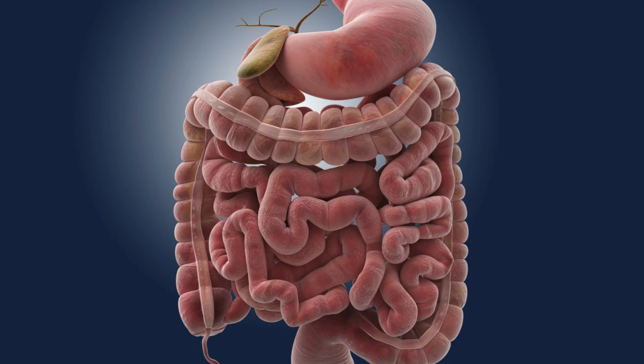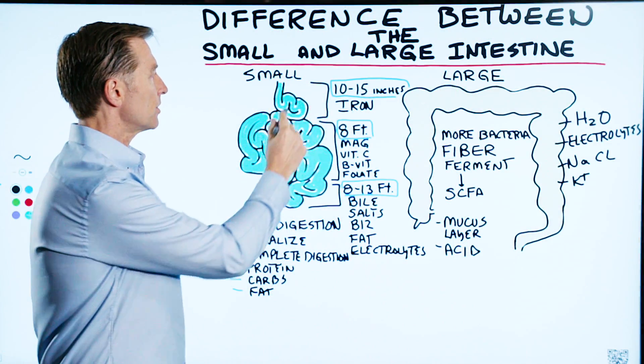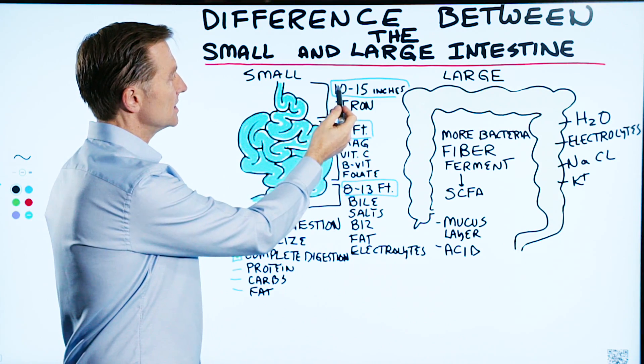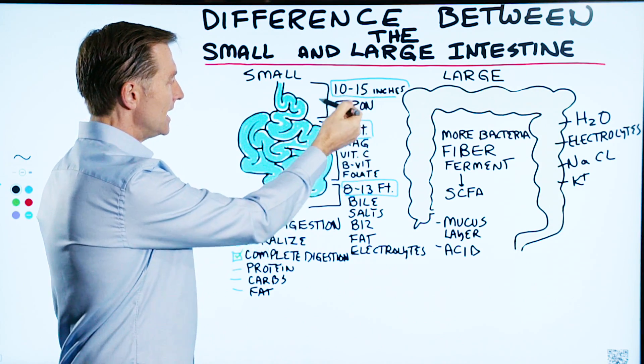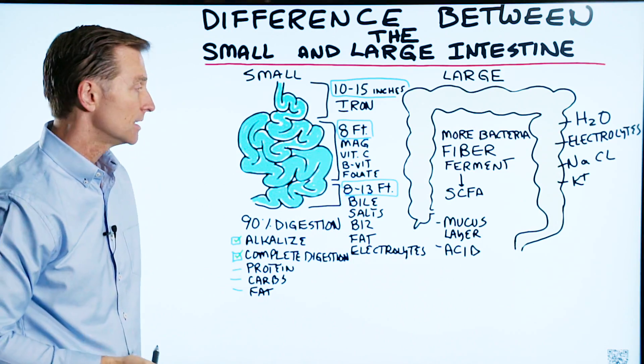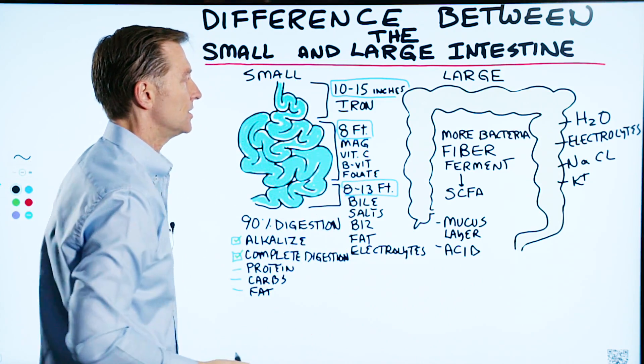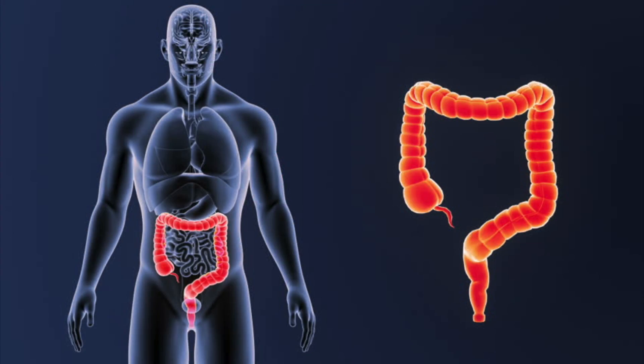One thing to know about the small intestine, it's a lot longer. There's three parts. The first part is about a little more than a foot, between 10 and 15 inches. The next part is about eight feet, and the last part is between eight feet and 13 feet. So it's quite long. Now the colon or the large intestine is about five feet.